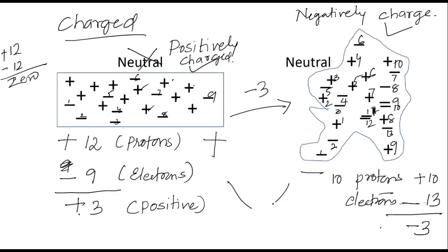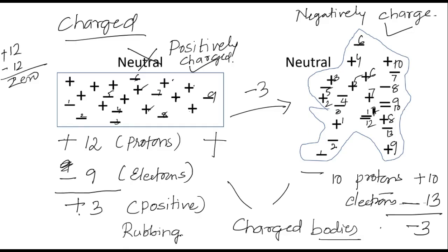We call these charged bodies. How do you charge the bodies? Just by rubbing. The same thing happens in the atmosphere — clouds get rubbed, there will be a breeze, and water molecules get rubbed against each other. When they rub, they become charged. These are called electric charges in physics.